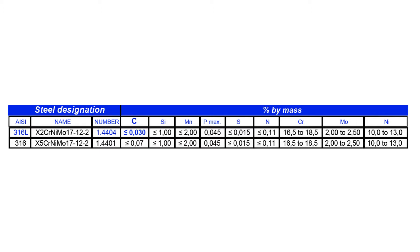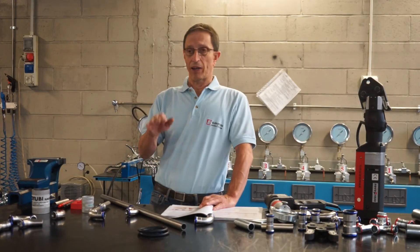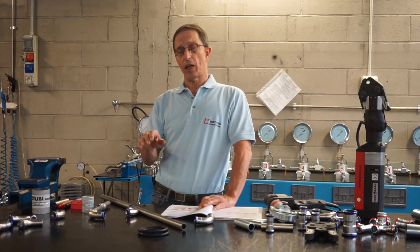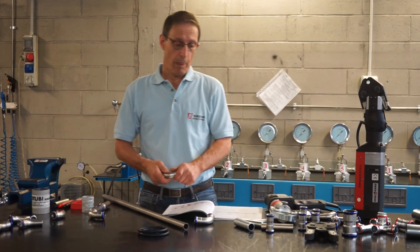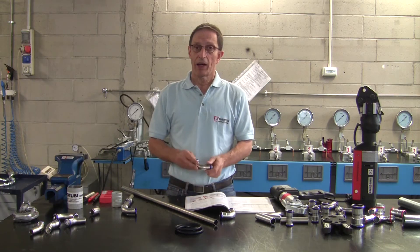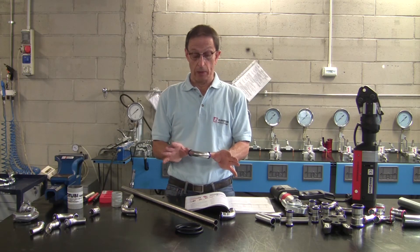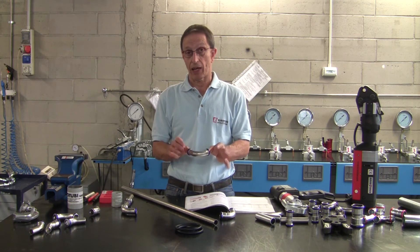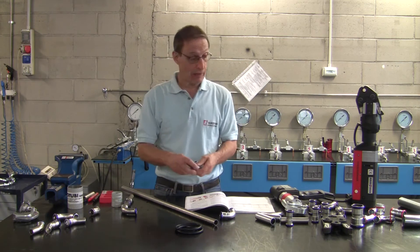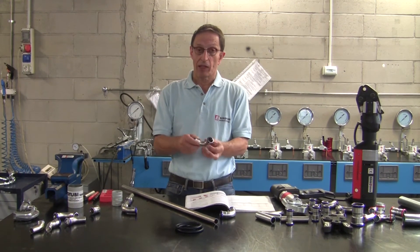In the abbreviation 316L, the letter L stands for 'low carbon' — meaning a low percentage of carbon. 316L steel has a carbon content less than or equal to 0.03% of its mass, whereas 316 steel can have a carbon percentage less than or equal to 0.07%. The amount of all other elements in the two types of stainless steel is exactly the same.